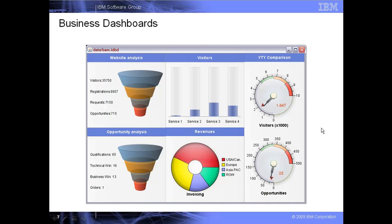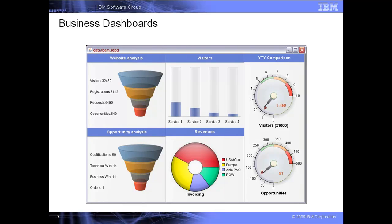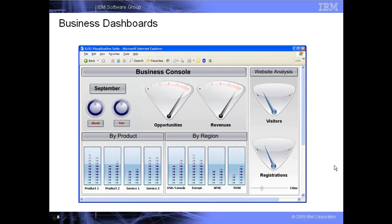Here we have an example of a dashboard display. This is a typical business activity monitoring display, used for monitoring some sort of process in a business system. Here is yet another business activity monitoring display showing various key performance indicators, also known as KPIs. By the way, the graphics that you can see on this display are provided out of the box with JVUES Diagrammer, and of course you can easily add your own.